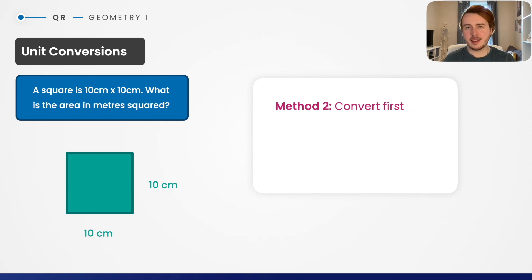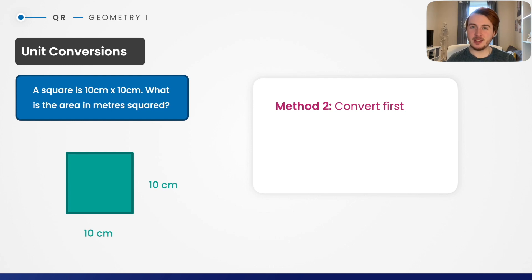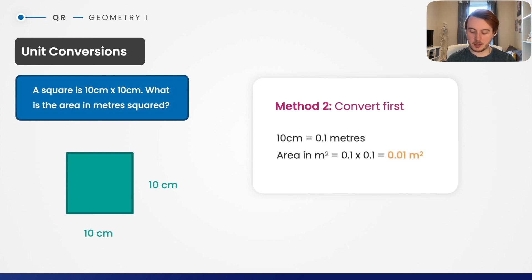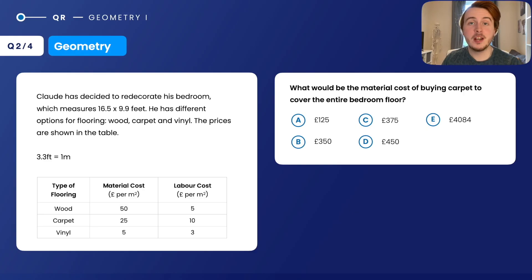Converting between squared units is different from converting simple linear units. It's actually easier to convert at the start. For example, 10 centimeters is 0.1 meters, so 0.1 times 0.1 gives 0.01 meters squared — and if you multiply by 10,000 you'd reach the same centimeters squared value. In my opinion, converting early is simpler and avoids errors. Now here's another question — pause the video and give it a go.